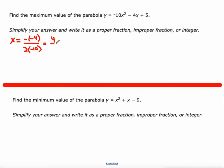So that'll give us 4 over negative 20, which is negative 1 fifth. So that's our x value. Now we need to figure out the y value. So what we do is we take the equation, we plug that negative 1 fifth into the equation.